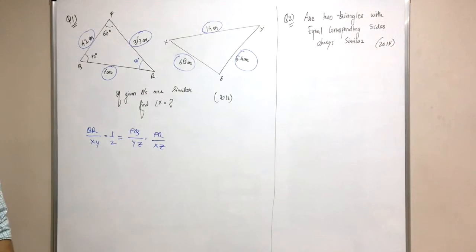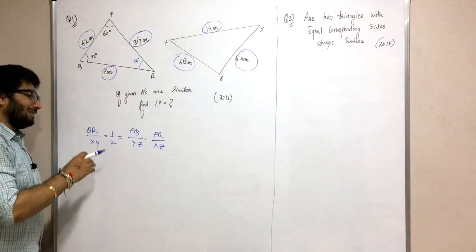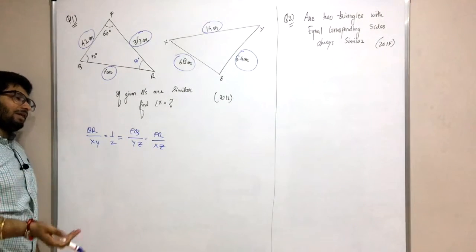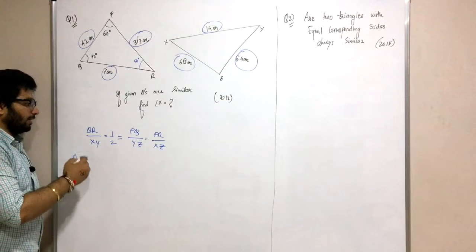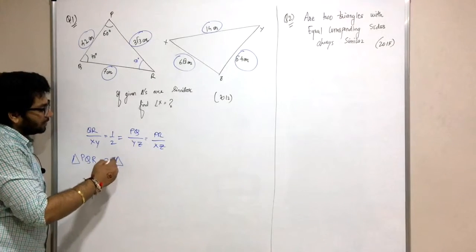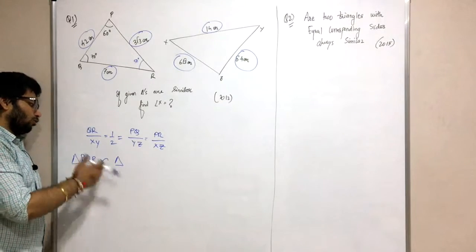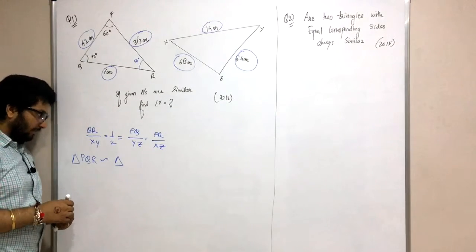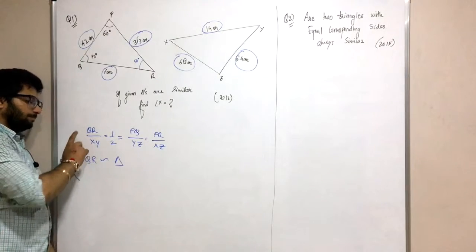In triangle PQR, which triangle is it similar to? Triangle PQR is similar to triangle XYZ. So PQ corresponds to which side? Let me check the correspondence.